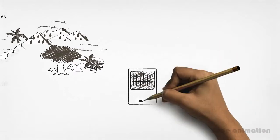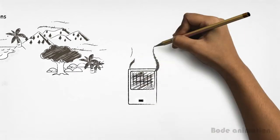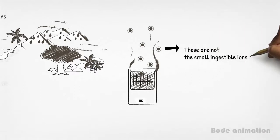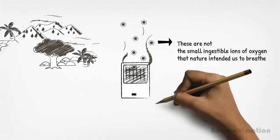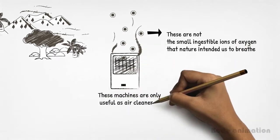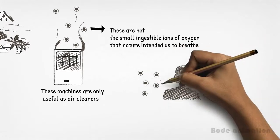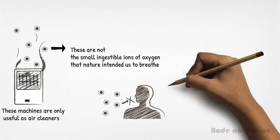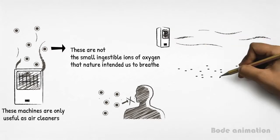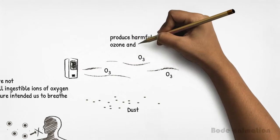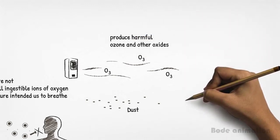While a few other inferior ion generators can truthfully claim to produce negative ions, these are not the small ingestible ions of oxygen that nature intended us to breathe. These machines are only useful as air cleaners. Large negative ions cannot be absorbed by the human body. They simply remove dust particles from the air. Some of these ionizing machines also produce harmful ozones and other oxides as byproducts.